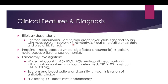Clinical features are etiologically dependent. For bacterial pneumonia, you typically have acute high-grade fever, chills and rigor, cough with mucopurulent sputum, and sometimes hemoptysis — meaning coughing out blood. If there is pleural involvement, you have pleuritic chest pain and pleural friction rub. Pleuritic chest pain occurs during inhalation or exhalation. On imaging, you may see radio-opaque whole lung opacity indicating lobar pneumonia, or patchy radio-opaque lesions for bronchopneumonia.